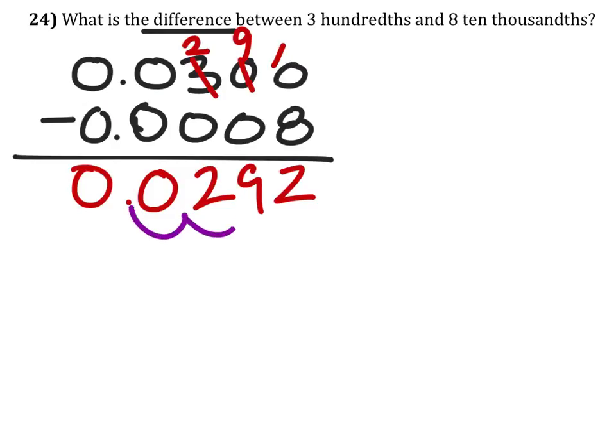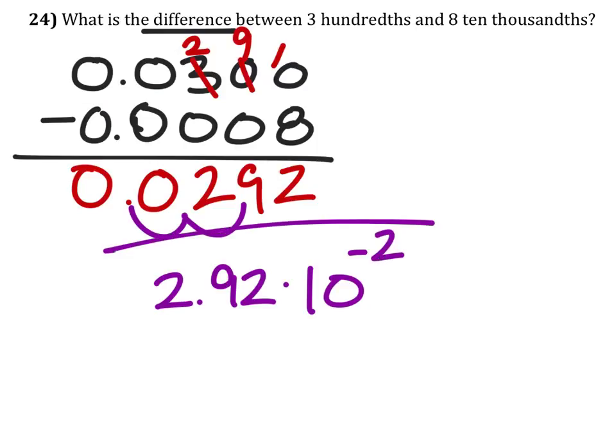But I assume they want this in scientific notation. So we have two point nine two. We move the decimal over twice. It's less than one, so it's a negative two. Bam.